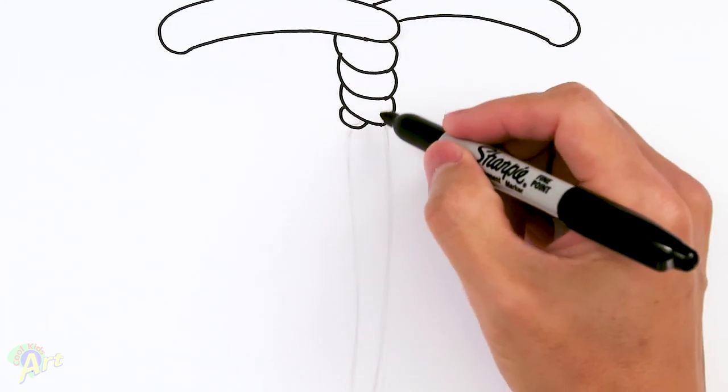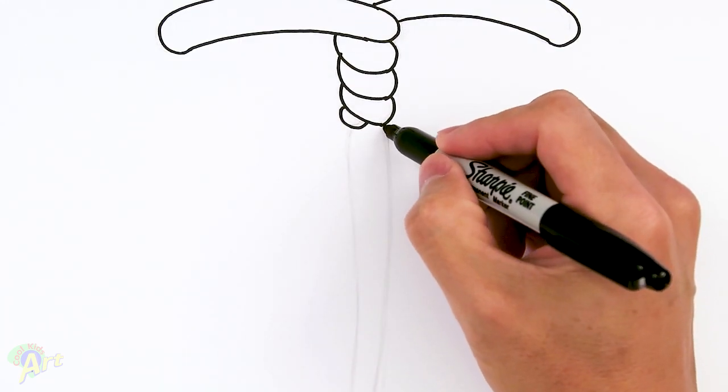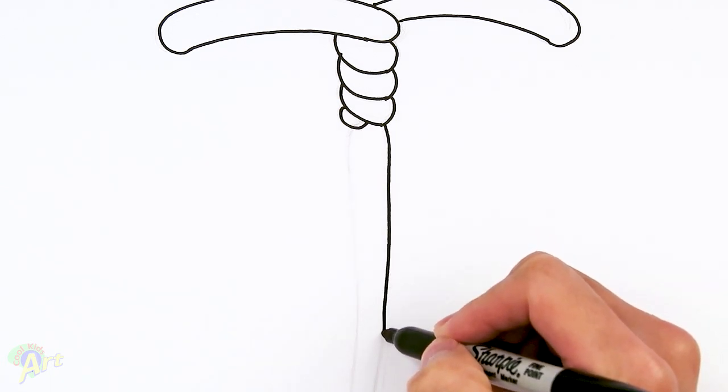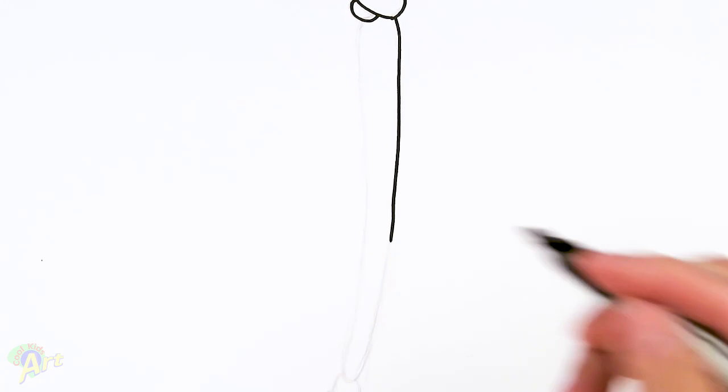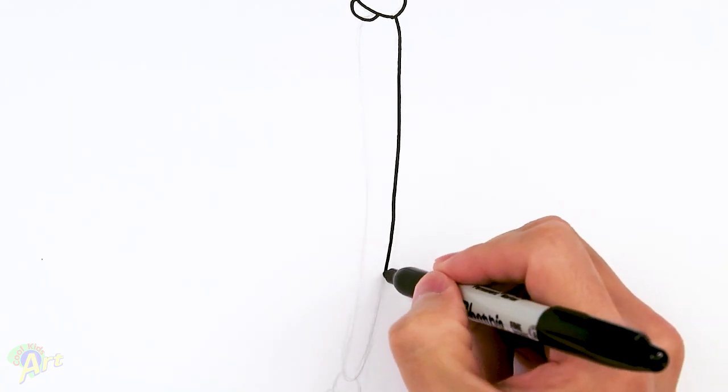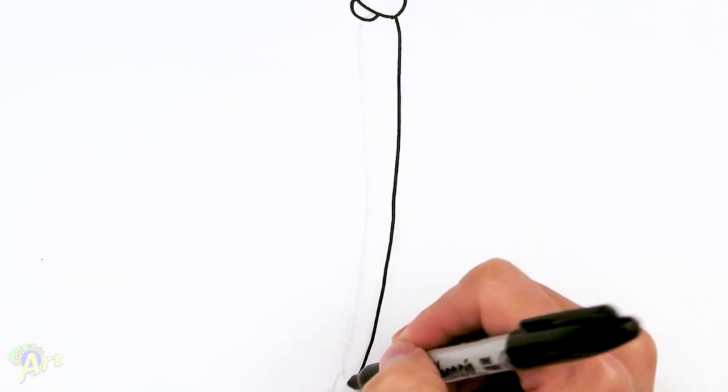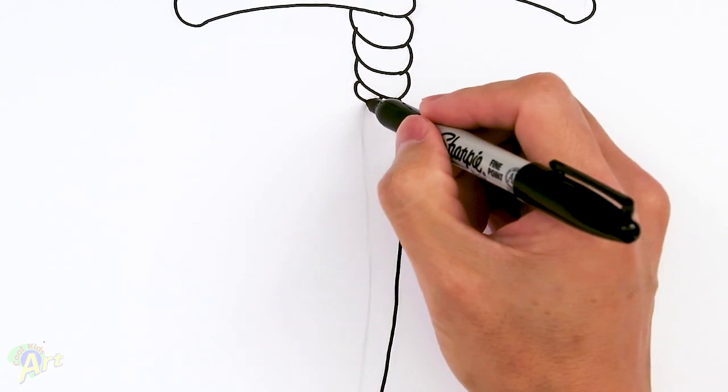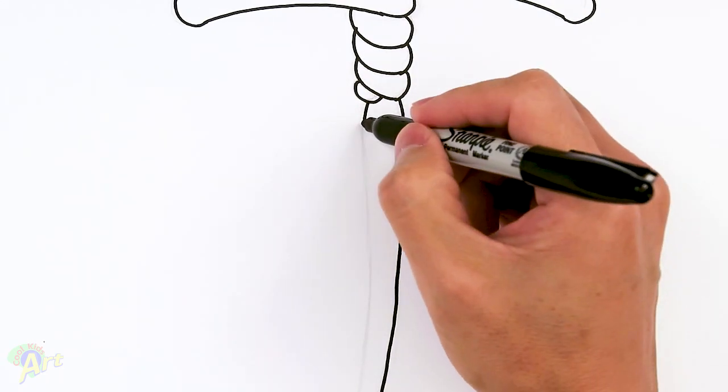We're just going to draw in the handle part. So just on the side here. Just kind of come down straight and then curve. Going to run out of space here. Just curve it out slightly. Okay, come back up here. So it's going to start out kind of wide.